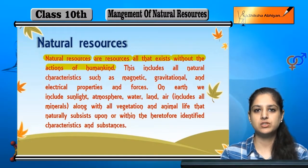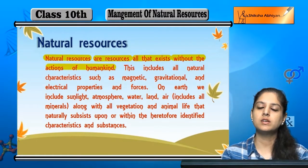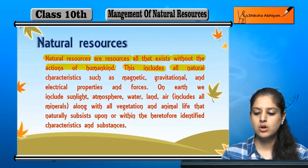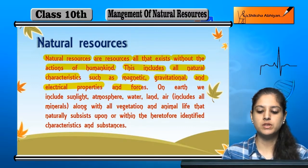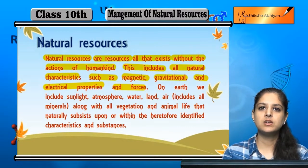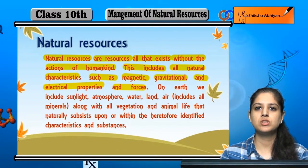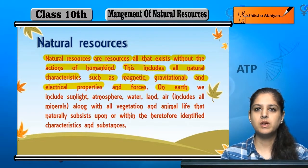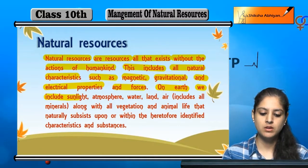Koi bhi aisi cheez that is existing without the intervention, without the action of man, it is called a natural resource. This includes all natural characteristics such as magnetic, gravitational, and electrical properties and forces. Har woh cheez jo magnetic hai, gravitational hai, electrical properties ke saath hai — woh sab natural hai, human beings ne kuch nahi kiya. In sabhi cheezon ko hum natural resources kehte hain.